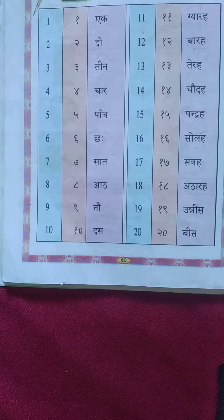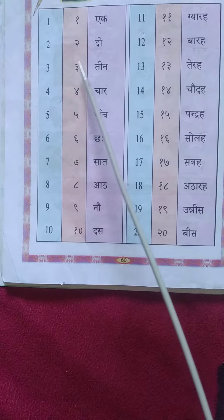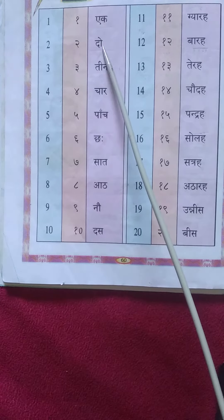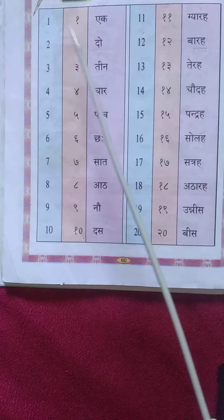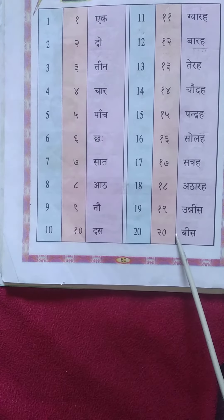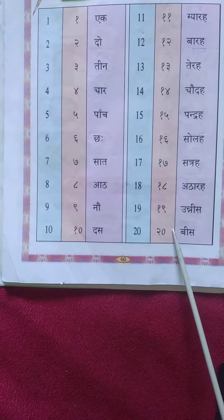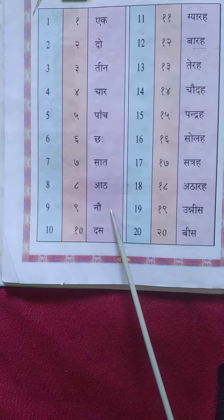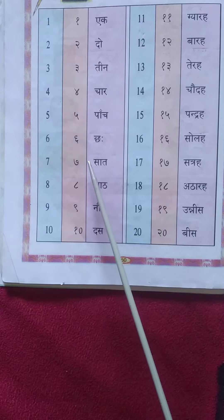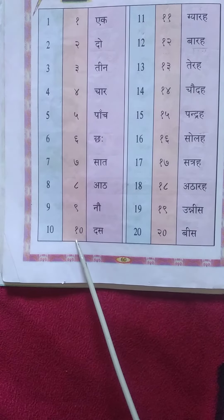Hello children, hope you all finished previous lessons' notes writing. Let us start our new lesson: lesson numbers, children. Means Ginti — Hindi numbers. In Hindi it is called Ginti, children. Let us learn 1 to 20 numbers in Hindi as well as in Akshar, in words.